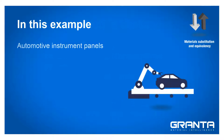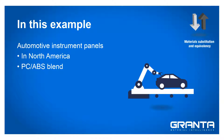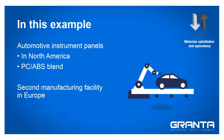Imagine you manufacture automotive instrument panels in North America using a polycarbonate ABS blend. You are opening a second manufacturing facility in Europe. How long will it take you to find a locally sourced alternative?